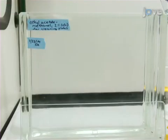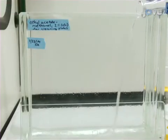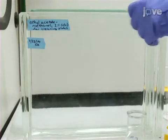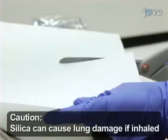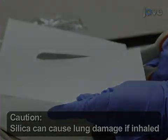TLC plate when set inside the chamber. Here, ethyl acetate methanol 2 to 1 is prepared. Next, wearing gloves and working in a fume hood.